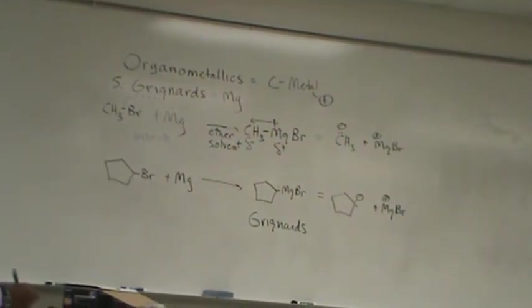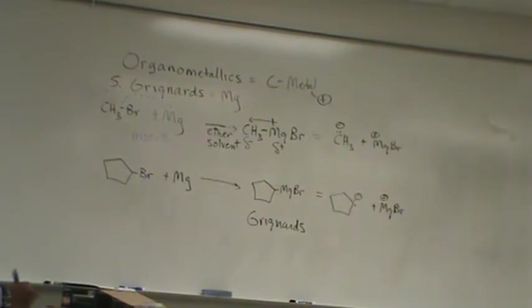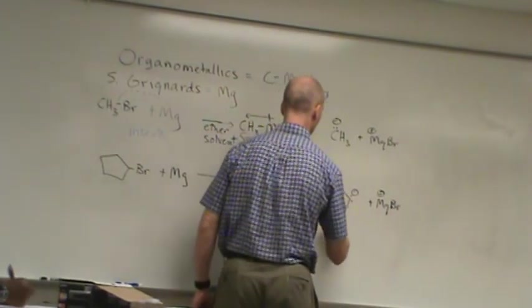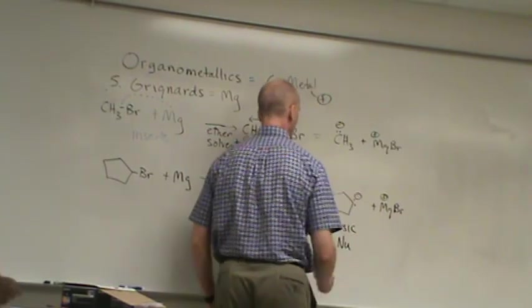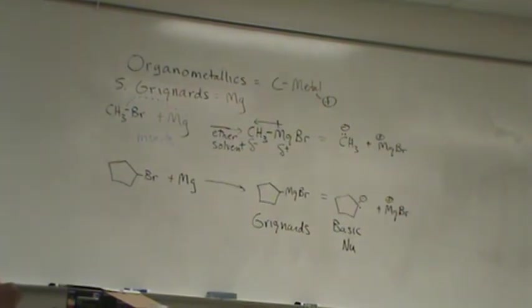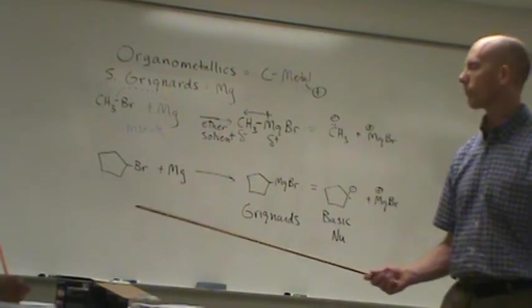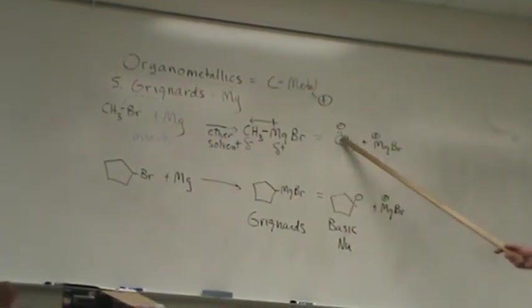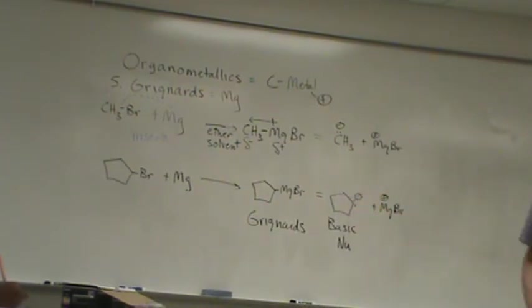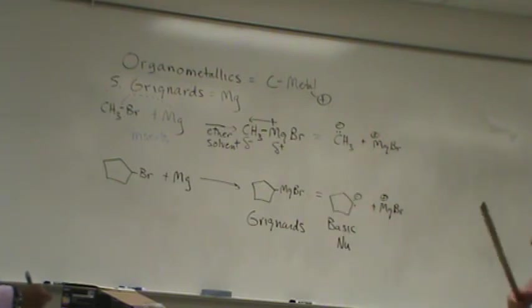So what's the fundamental property of Grignards? Fundamental property is these things are very basic. And they can act as good nucleophiles. So this is the rule you want to do when you see a Grignard. Write it down. Pull off the MgBr and write a lone pair on that carbon atom. So this is where we can start doing some chemistry.